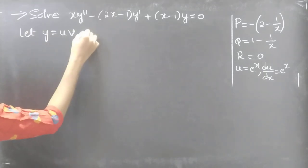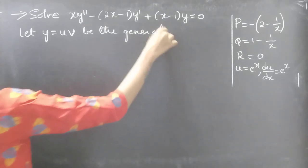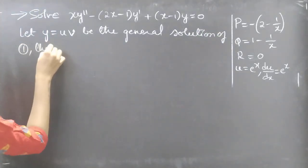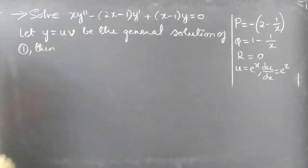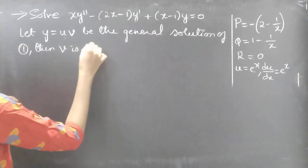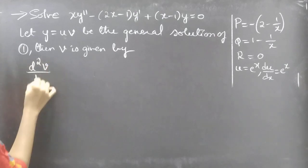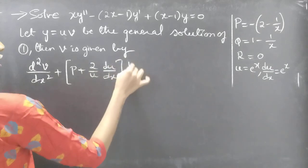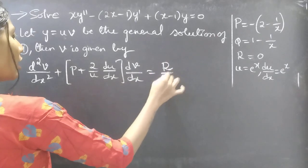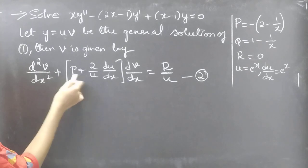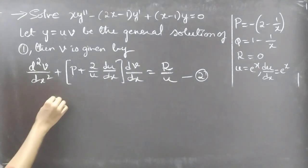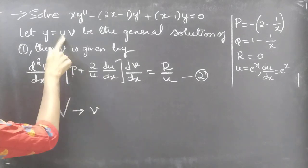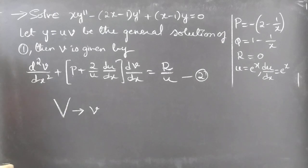Let y = u·v be the general solution of equation 1. We already have u = e^x, and we need to find v. The formula for v is: d²v/dx² + [P + (2/u)·(du/dx)]·(dv/dx) = R/u. Consider this as equation number 2. Now substitute P, u, du/dx, and R into equation 2.